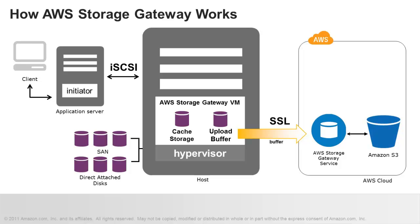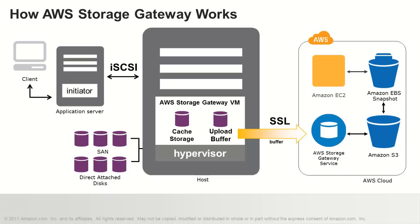If your applications read data that is not available from cached storage, the gateway will automatically retrieve it from the AWS cloud. Gateway cached volume data is stored in Amazon S3. You can create EBS snapshots of this data, which you can then restore to your gateway cached volumes. You can also access the snapshot data from Amazon EC2.